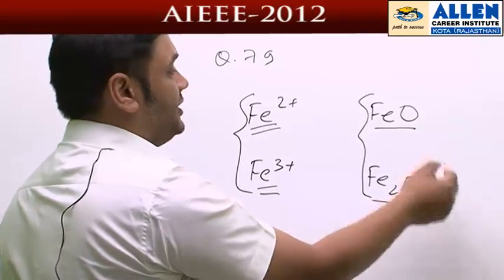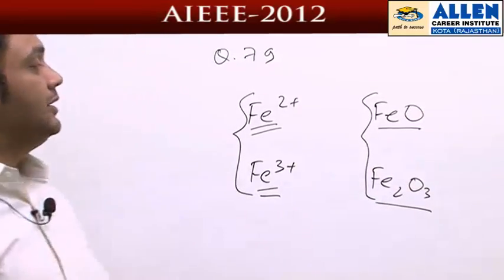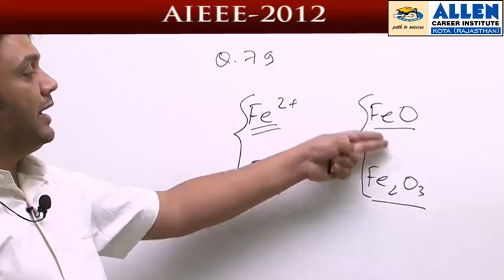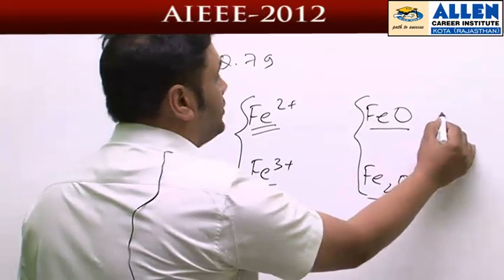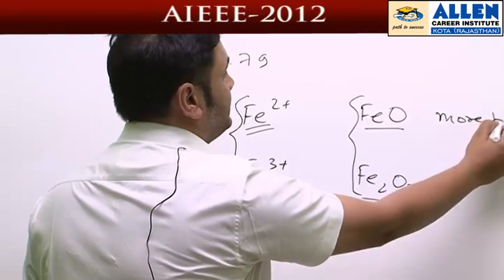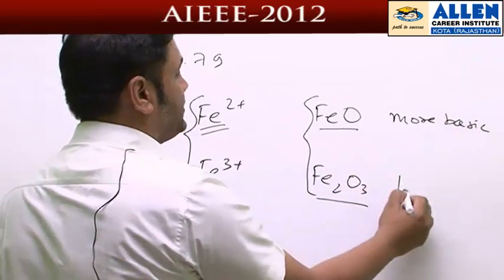They're both basic in nature, but ferrous oxide's basic character is more as compared to ferric oxide. So this is a correct option - ferrous oxide is more basic and ferric oxide is less basic.